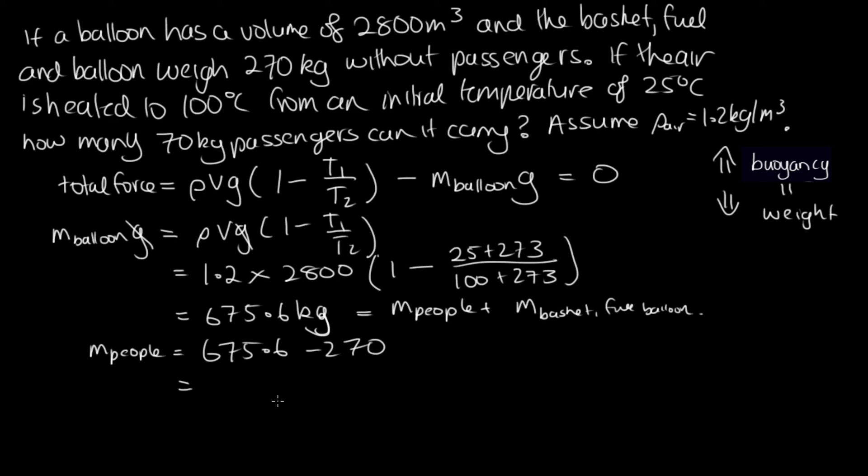And so this is equal to 405 kilograms. Now if each person weighs 70 kilograms, we've got the number of people times 70 is equal to 405. And so the number of people is equal to 5.79. And since we can't take 0.79 of a person, this tells us that the most people we can take is five people.